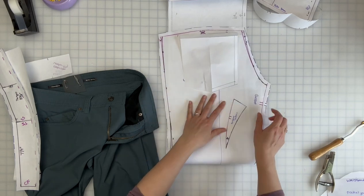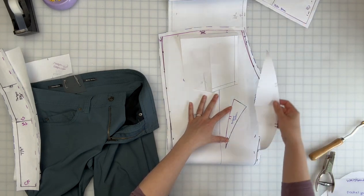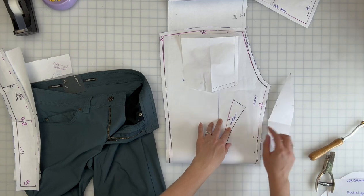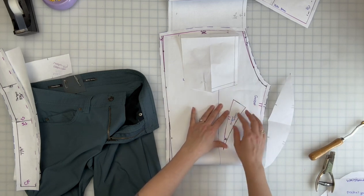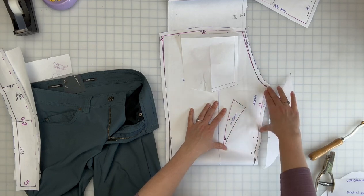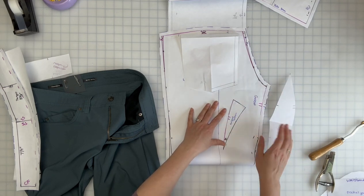I've also taped my original pattern for my gusset on both the front and the back pattern pieces, so that if I want to ever make this pair of pants without the gusset in the future, I have that and I can tape it to there and then add my seam allowances.